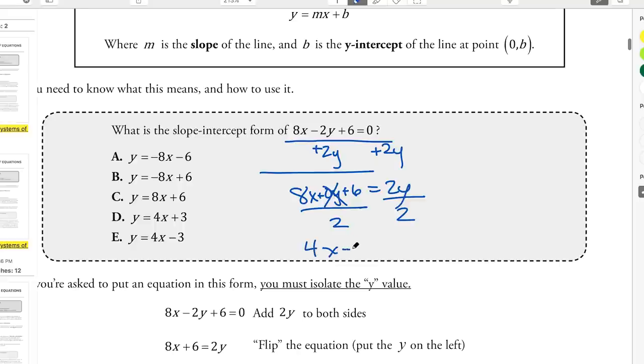And then I'm just going to divide everything by 2 to get the y by itself. And I get 4x plus 3 equals y. And I can rewrite that the other way. And that's D. Cool? And I just distribute the 2 there and there. So make sure when you divide both sides by this, you distribute it to all the elements that are hanging out there. Okay?